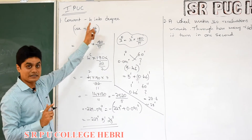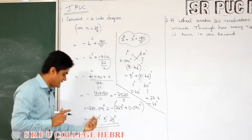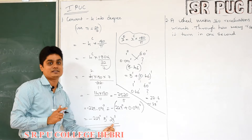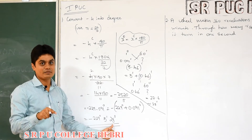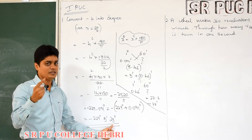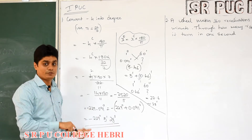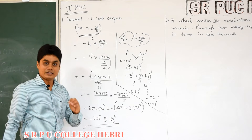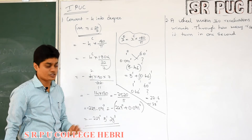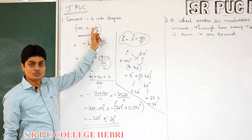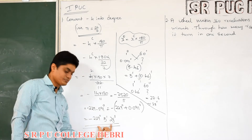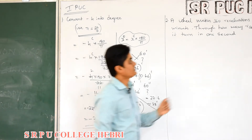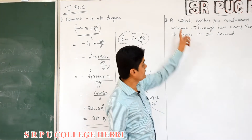So, minus 4 radian in terms of degree is minus 229 degree, 5 minutes, 28 seconds. Remember, for both questions you should use pi equal to 22 by 7. Most of the time it will be given in the question. The final answer must be in this format. I hope you understood.